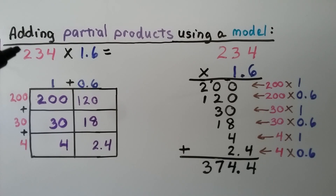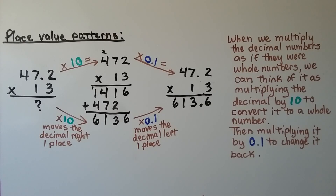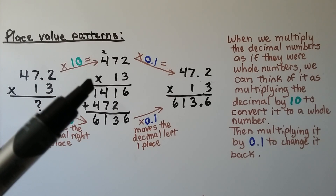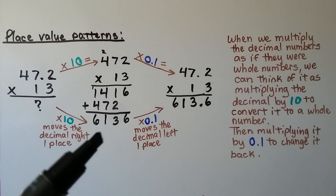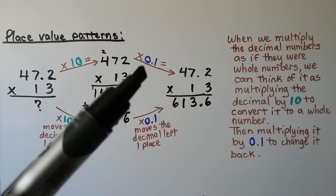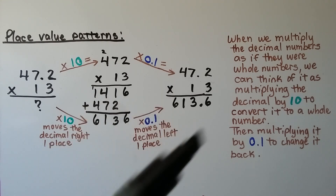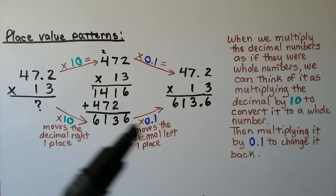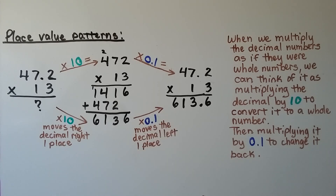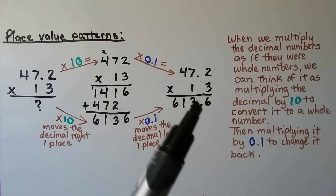If we were multiplying in the thousands place, we would have another box for the thousands. Here's what's happening with place value patterns when we multiply decimals. We have 47 and 2 tenths times 13. If we multiply 47 and 2 tenths times 10, it'll be 472. Then we can multiply it times 13 as if it were a whole number and get 6136. Then we can multiply it by 1 tenth to bring it back to 47 and 2 tenths — meaning we multiply 6136 times 1 tenth to find the actual product as 613 and 6 tenths. When we multiply the decimal numbers as if they were whole numbers, we can think of it as multiplying the decimal by 10 to convert it to a whole number, then multiplying by 1 tenth to change it back.